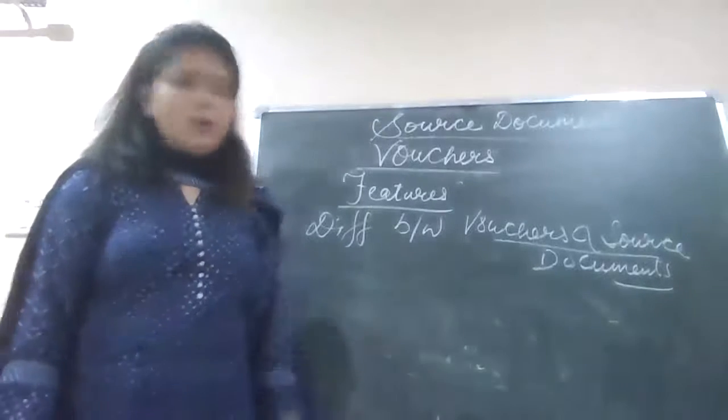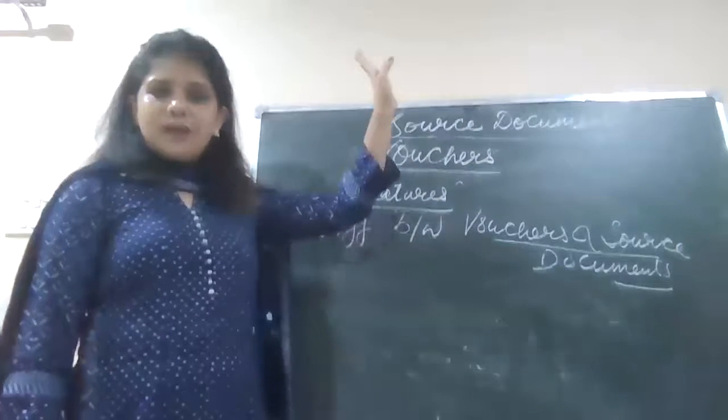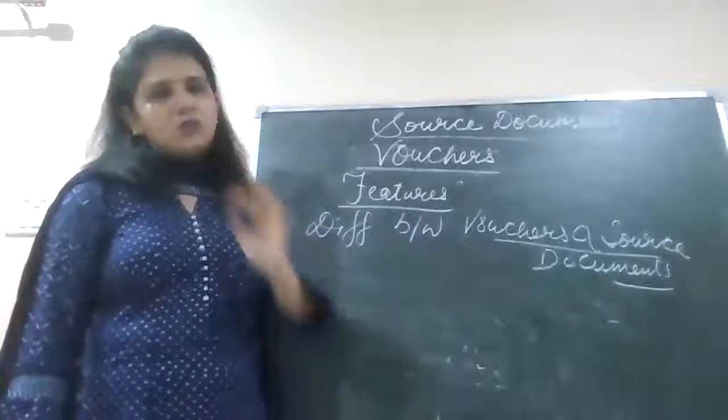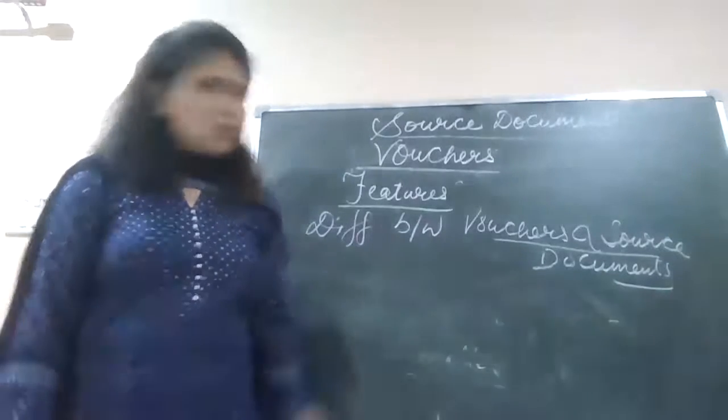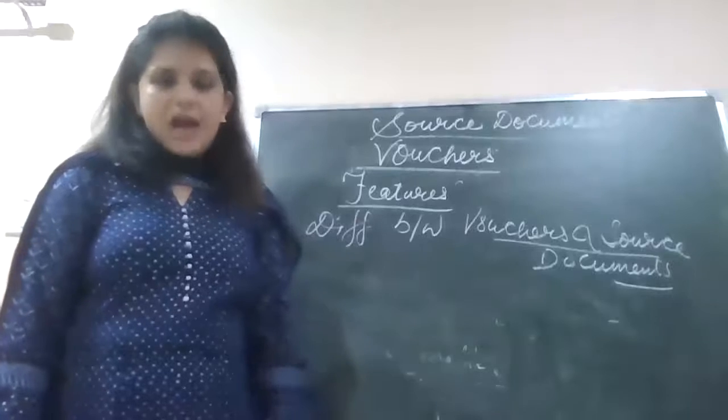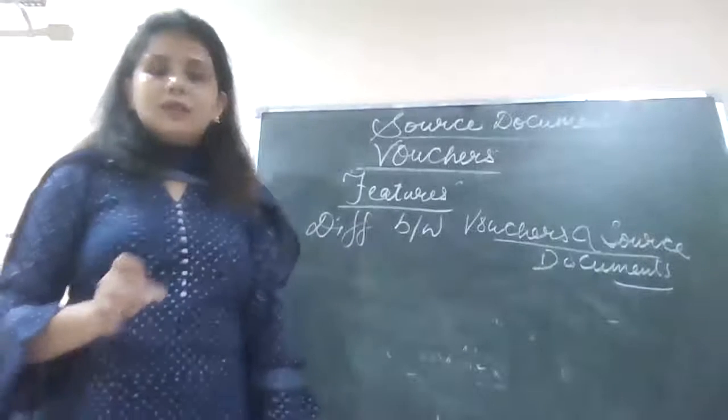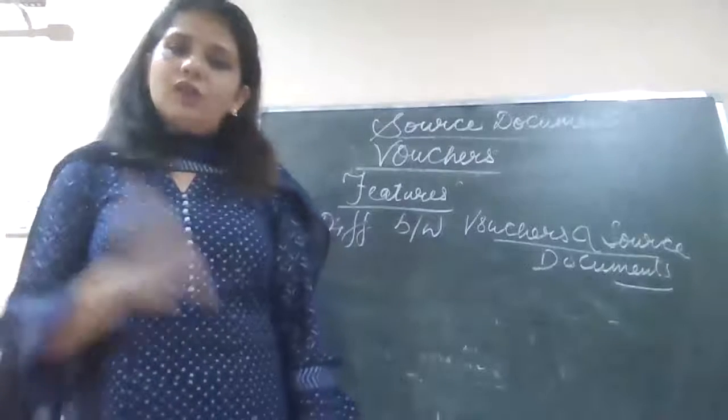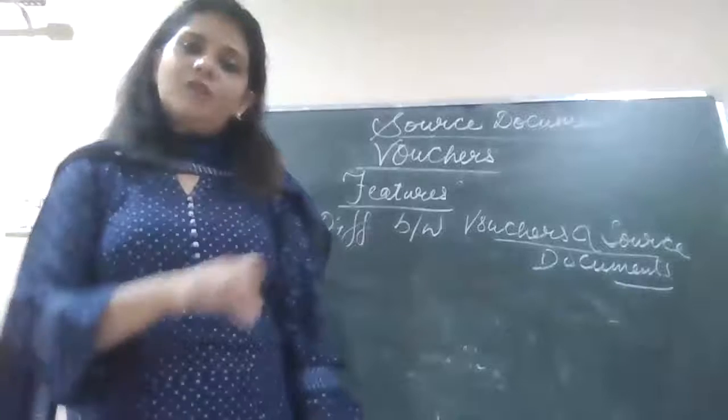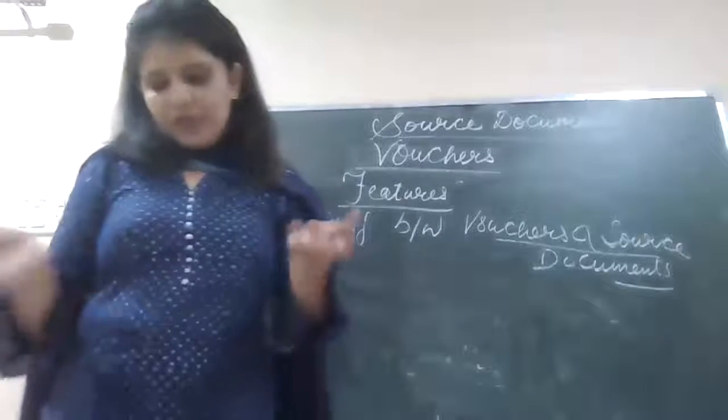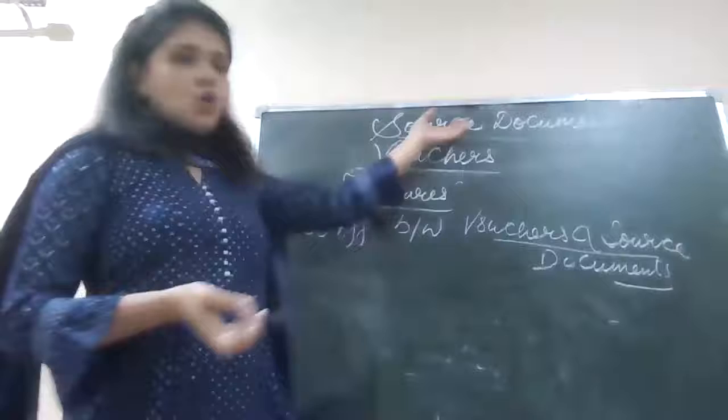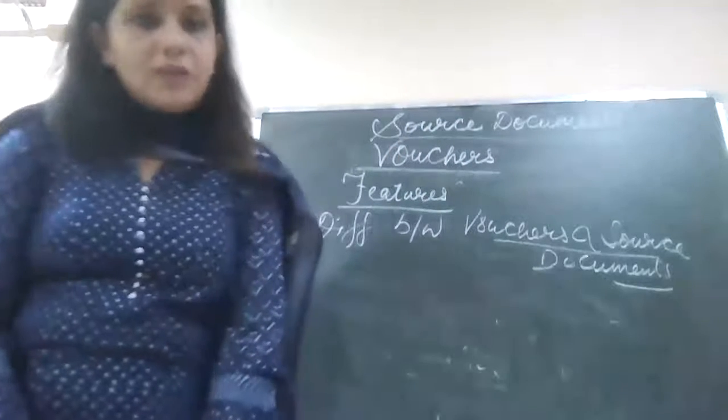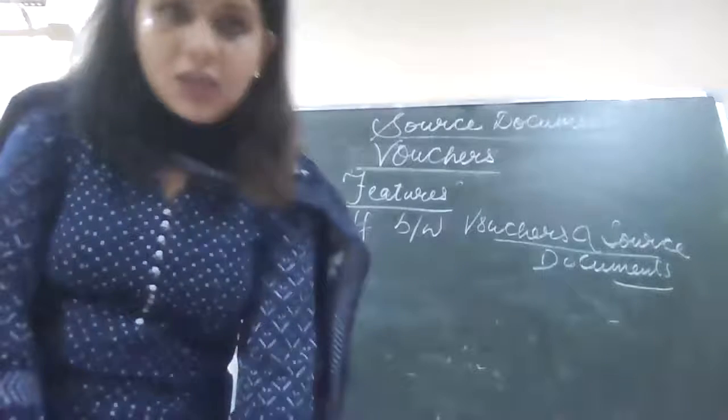Evidence: source documents are the evidence of the transaction. Vouchers are the evidence of recording. If you want to check authenticity of any recording, you can refer the voucher. If not satisfied with voucher, you can refer your source document. Source document is attached with the voucher. Numbering: source documents are never serially numbered, but vouchers are always serially numbered, which helps the auditor to check them easily.